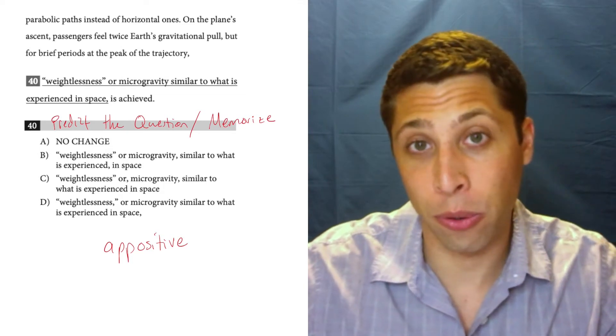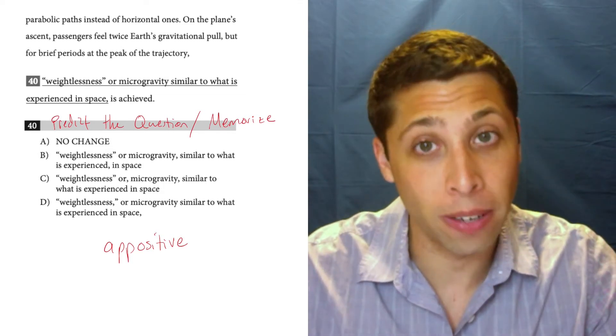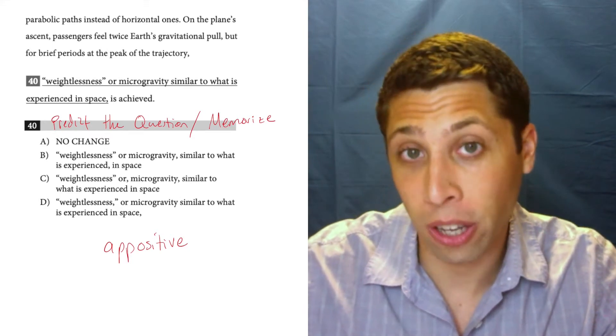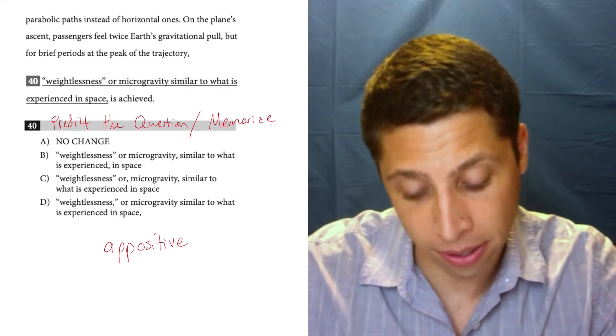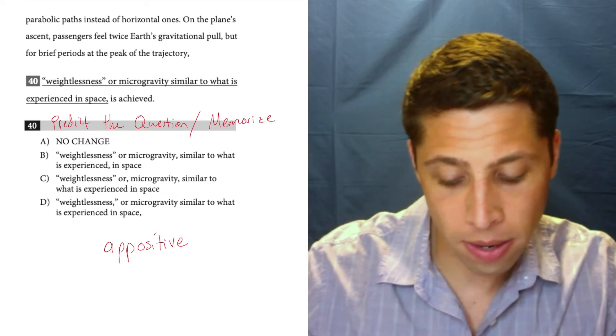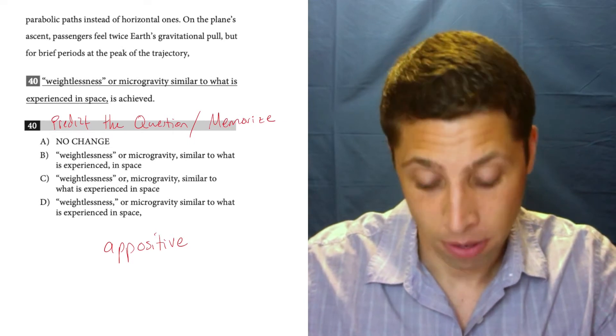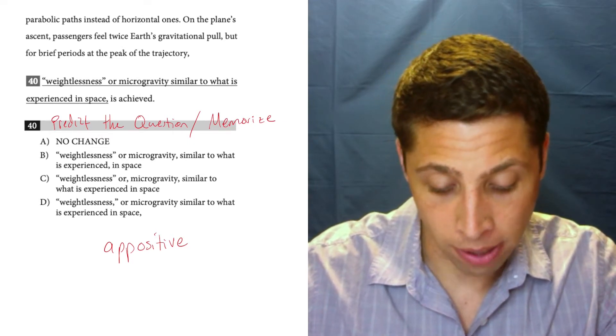Sometimes when we do this, we need to use commas because the description is kind of like an extra clause. It's something we could omit from the sentence. So what I want to do here is think about what is essential and what is just extra. If I look at this sentence, it's kind of long. It goes over two pages too. They do that on purpose.